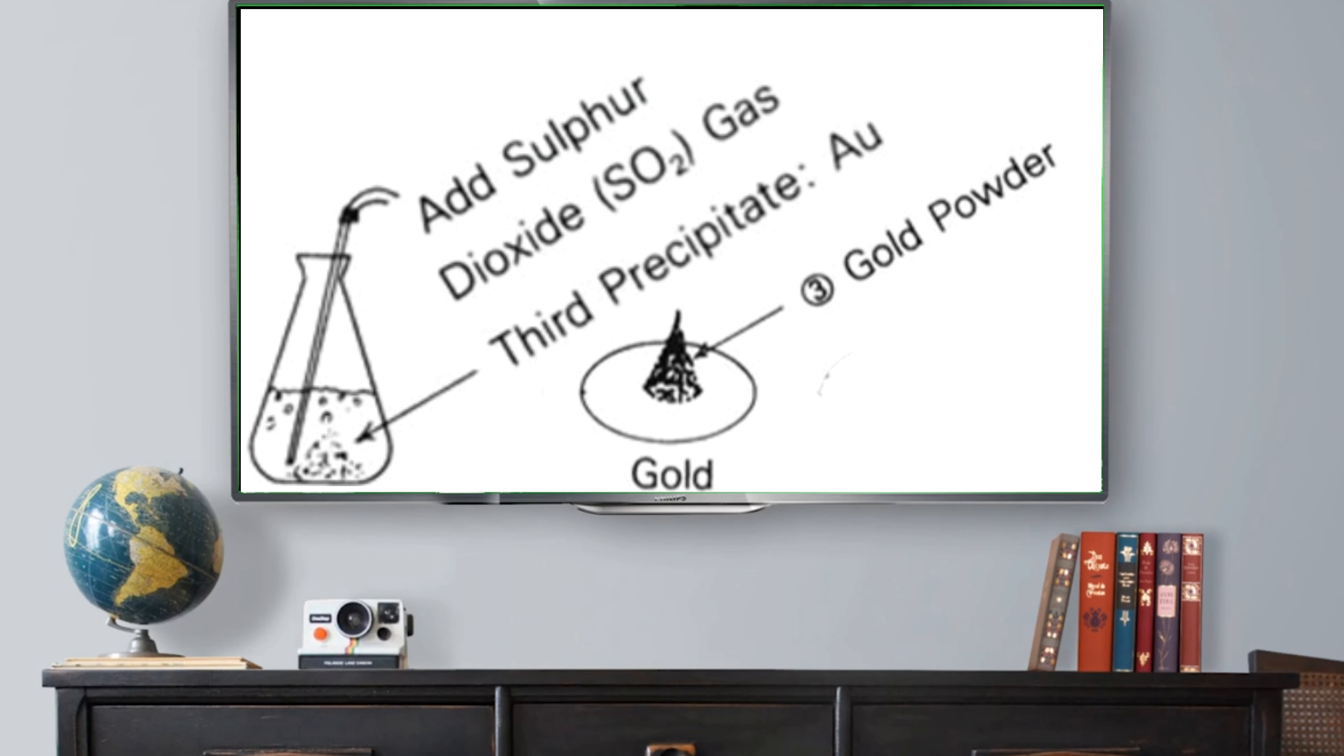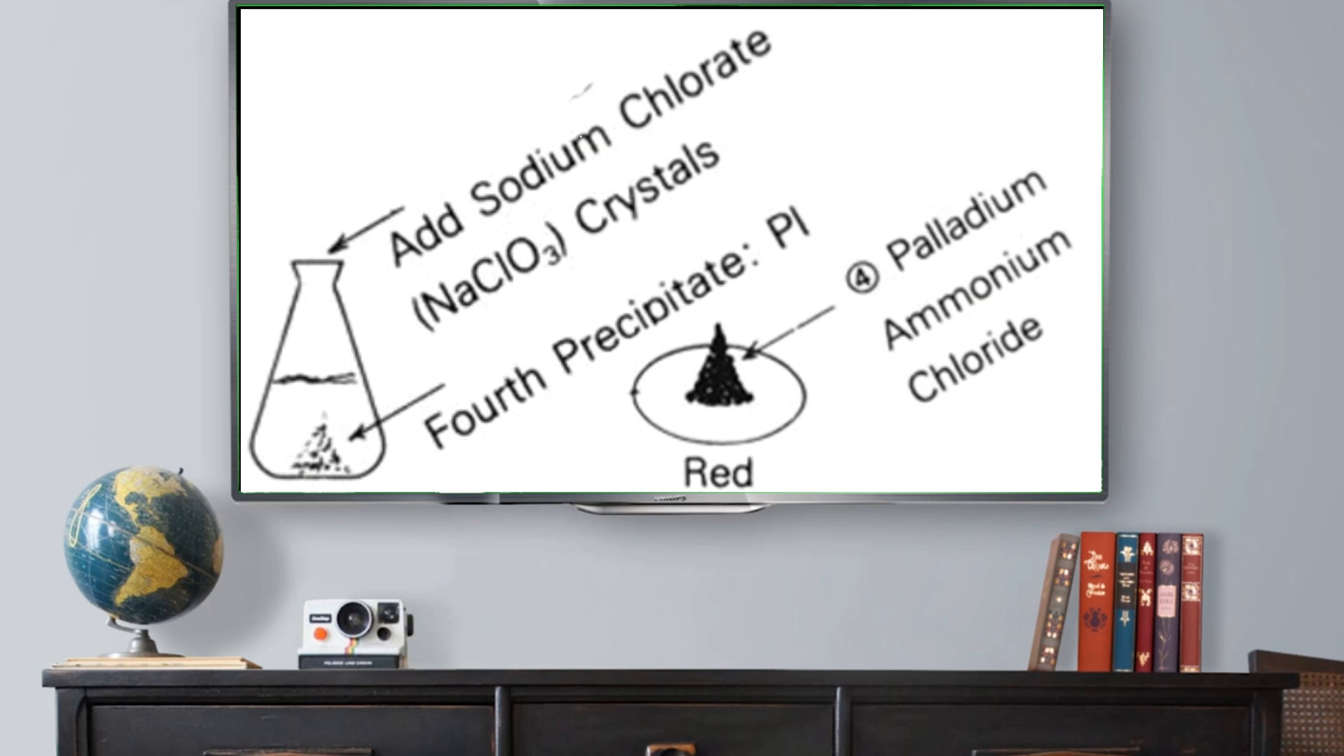Now, you should have several filter papers containing different precipitates such as platinum chloride, palladium chloride, metallic gold, and iridium chloride.